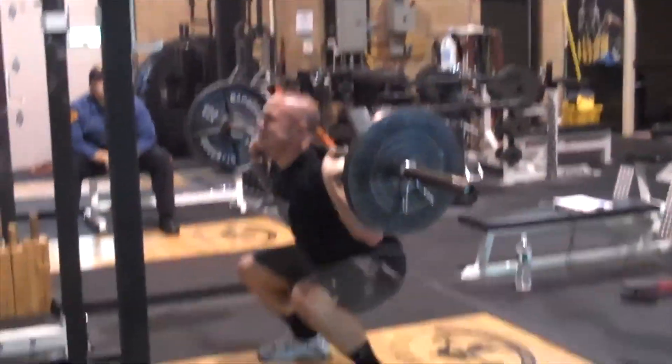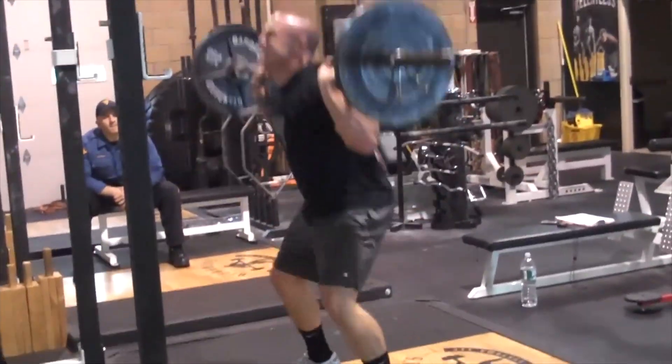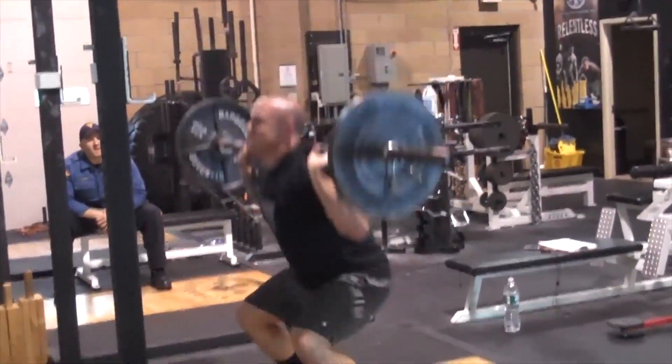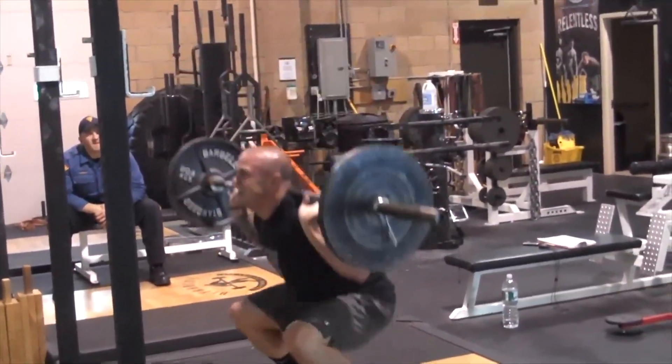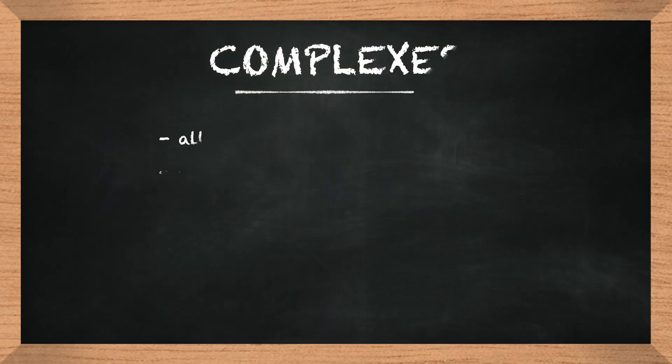Long story short: a circuit is different exercises performed in succession with various pieces of equipment, whereas a complex is a series of movements that all use the same implement. Now here are the pros and cons of both.